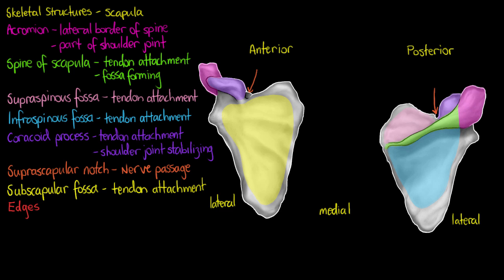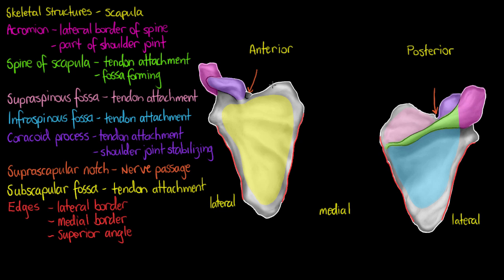With the scapula, many people get confused about which way it's facing — where's anterior and where's posterior. There are names for all of the borders that you should familiarise yourself with. The first is the lateral border of the scapula — that long lateral surface. We'll also have a medial border. These refer simply to directional terminology to help you orient yourself.